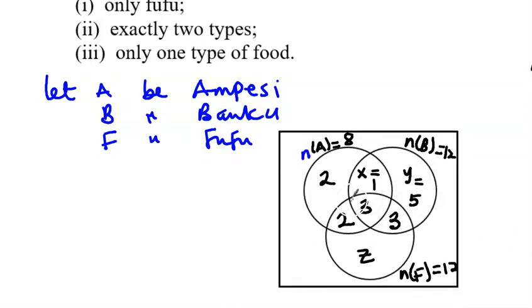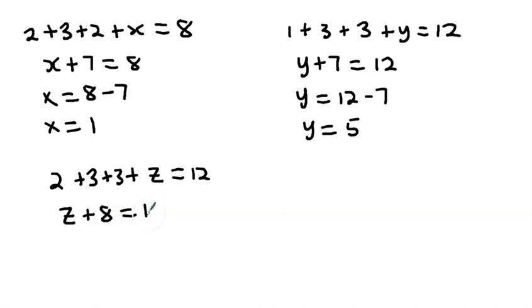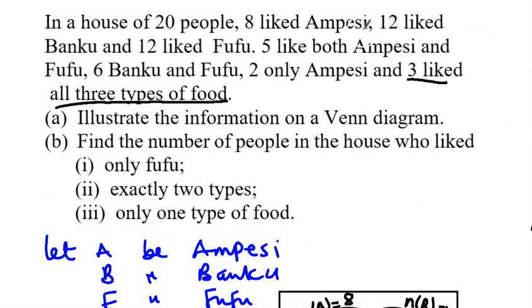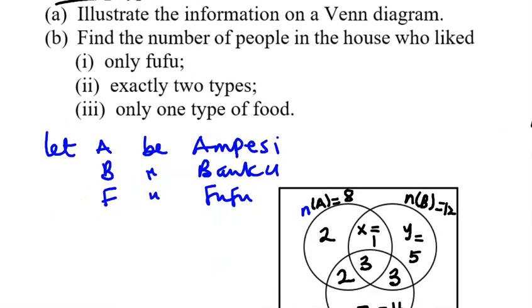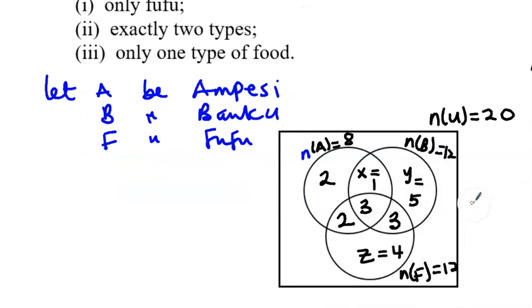For z, using the Fufu circle total of 12: 2 (Ampesi & Fufu only) + 3 (centre) + 3 (Banku & Fufu only) + z = 12. That gives z + 8 = 12, so z equals 12 minus 8, which is 4. The Fufu-only region is 4. We were told the house has 20 people, so the universal set must equal 20. This completes the Venn diagram.